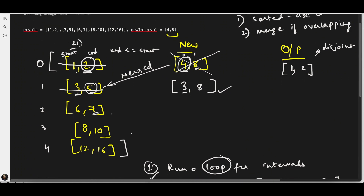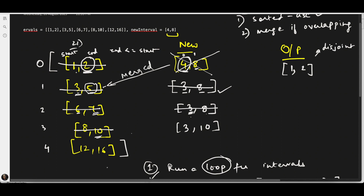Is 7 less than 3? It is not. So this again needs to be merged. We take the minimum — 3 — and the maximum — 8. So if you have already booked a room from 3 to 8 and 6 to 7 is another slot, it falls within it, so 6 to 7 is cancelled. The new interval remains 3 to 8. Next, we come to 8 to 10 and 3 to 8. Is 10 less than 3? No. So we merge: minimum is 3, maximum is 10. So if a room is booked from 3pm to 8pm and you need another slot from 8 to 10, they are not mutually exclusive. The new interval becomes 3 to 10.